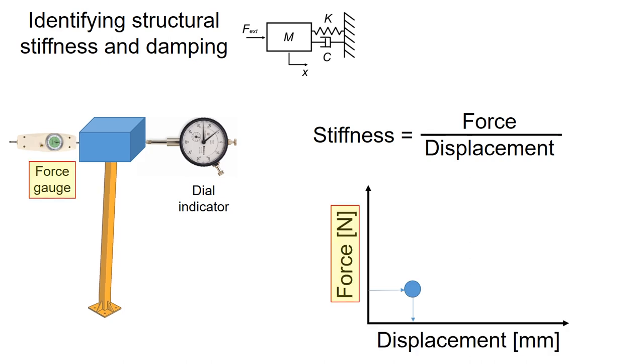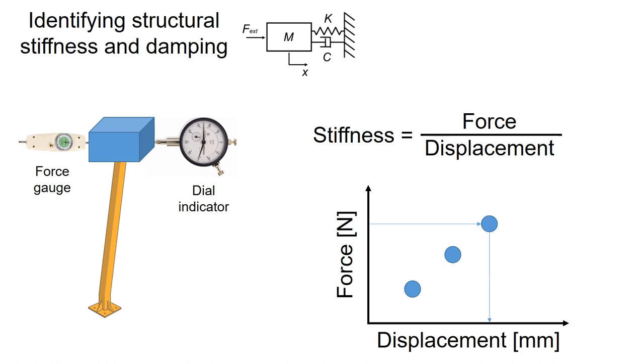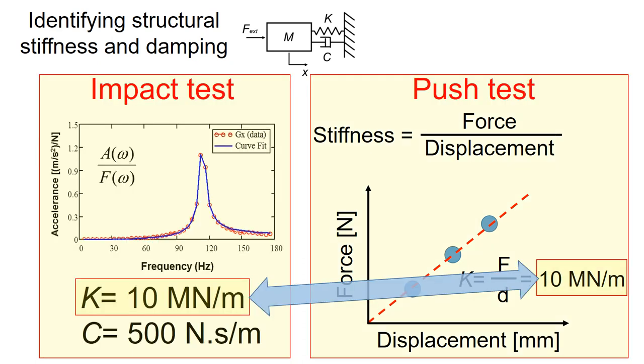Record the applied force and record the displacement of the structure. Apply larger force and record the displacement and applied force. Once you have enough data points, you can curve fit the measured data and estimate the structural stiffness, which is force over displacement. If your stiffness measurement obtained from the push test is similar to the stiffness from the impact test, you can have higher confidence in your impact test results for both structural stiffness and damping.